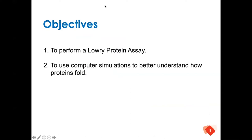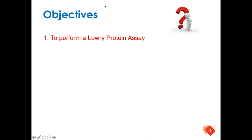Two objectives. The first: we're going to be looking at performing a Lowry protein assay — that is identifying an unknown concentration of protein based on a standard curve. In the second instance, we're going to start looking at some computer simulations, some molecular modelling programs, and use them to better understand how proteins come together — that is from the primary through to the quaternary structure. Starting off, let's look at the protein assay.